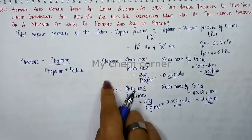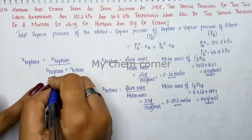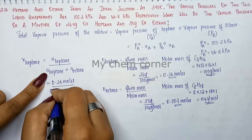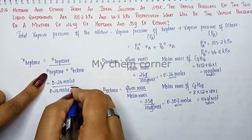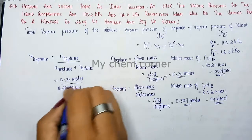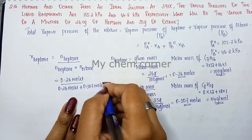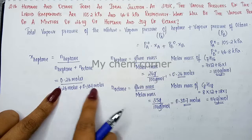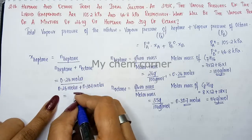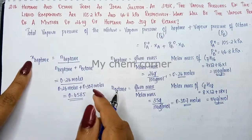Now substituting into the mole fraction formula: XA equals 0.26 moles divided by (0.26 plus 0.307) moles. Simplifying the denominator and dividing gives a mole fraction of heptane of 0.4585. Mole fraction has no unit.